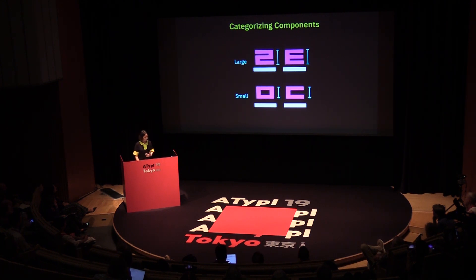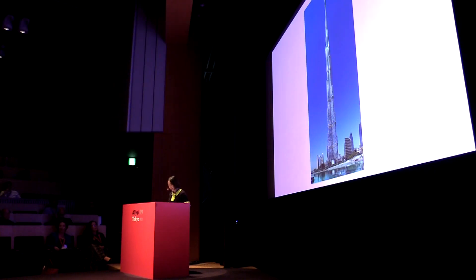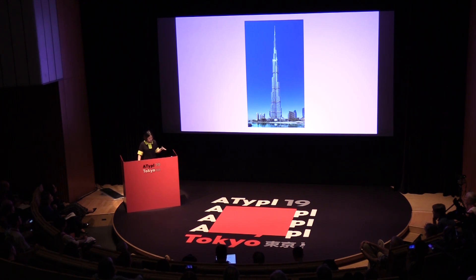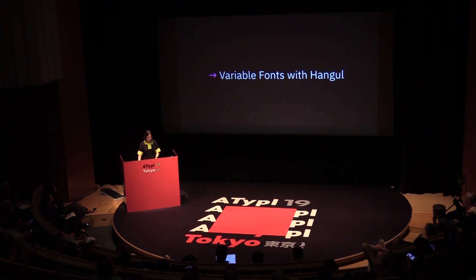Once you design one module properly, you can get another one almost for free. You can categorize these modules according to component size — some are about the same size and can be grouped together so you can reuse the same module among the same glyph. Again, it's a big saving. Using smart components is easy at first, but it takes some time to master how to use it in Hangul, since you have to think very hard. But once you carefully set up a design system and process, you can build Hangul faster and better, no matter how tall the building is.